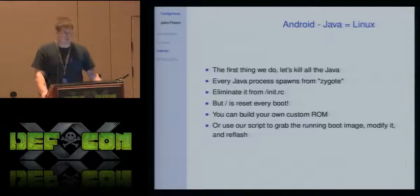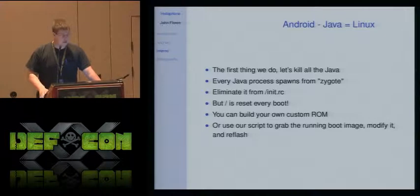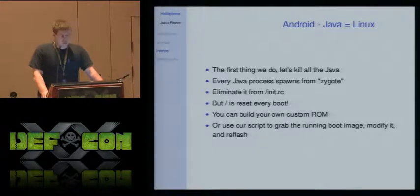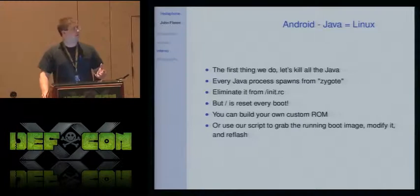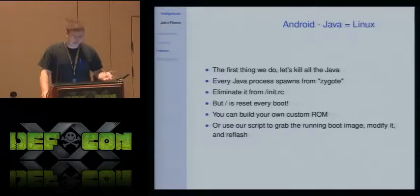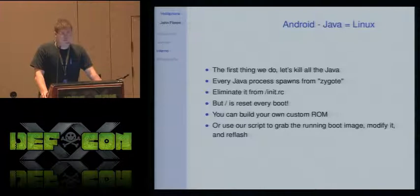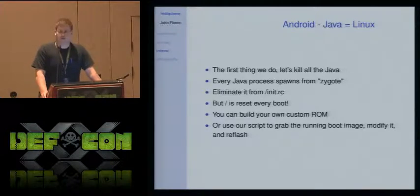When we were going about this, the first thing we did was, as Shakespeare said, 'kill all the Java.' Android's Linux environment starts a kernel, the kernel loads an init script, and we found that every single Java process on the system is launched from one initial process called Zygote. If you stop Zygote from starting in the init script — which is easy, you just comment it out — then the Java environment doesn't launch and you just have Linux. You just take it out of /init.rc, but then you realize /init.rc is reset on every boot. The way to fix that is either build your own custom ROM, or do what we did: write a script which grabs the currently running ROM, modifies it, and reflashes it. It's very quick and convenient.